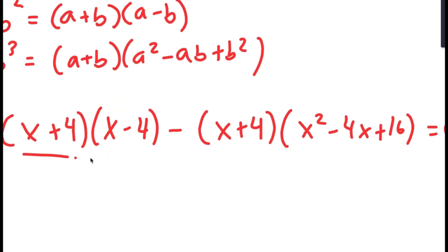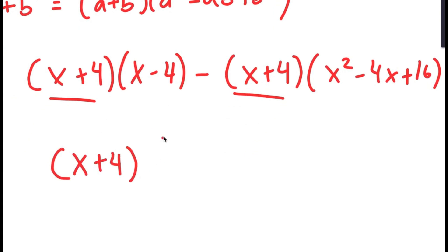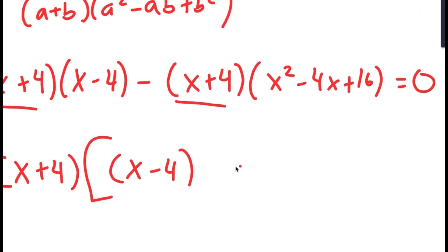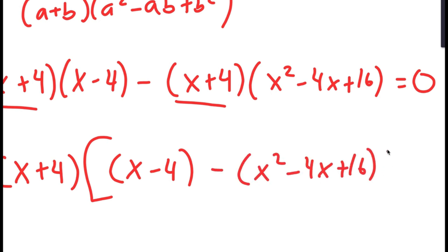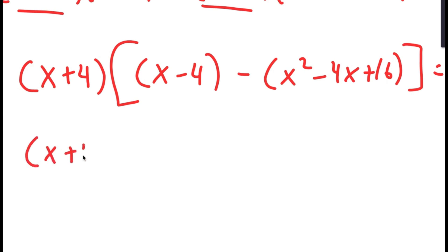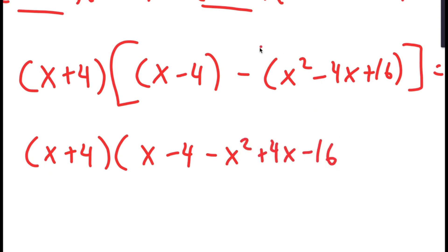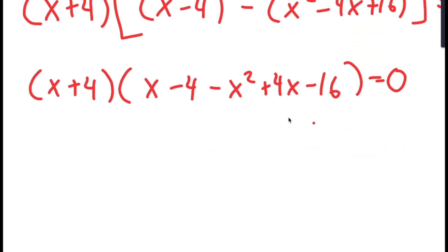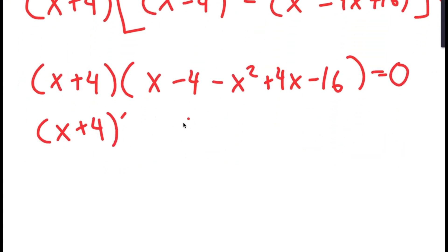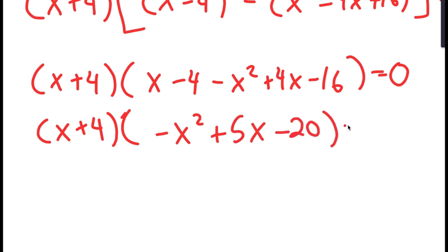Now, because both of these terms have x plus 4 in them, I can factor out x plus 4. So I get x plus 4 times x minus 4 minus x squared minus 4x plus 16 is equal to 0. Distributing the negative sign, and simplifying, I get x plus 4 times negative x squared plus 5x minus 20 is equal to 0.